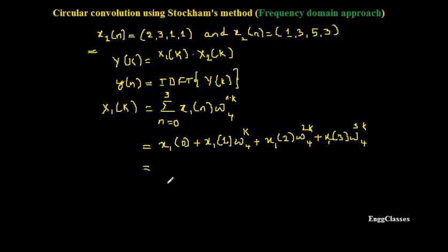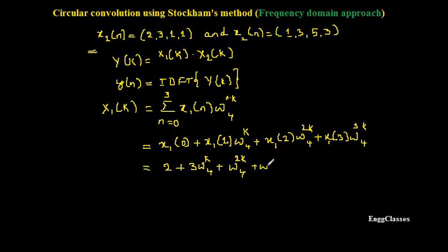Now substituting the values: x1(0)=2, x1(1)=3, x1(2)=1, x1(3)=1. So X1(k) = 2 + 3·W4^k + 1·W4^(2k) + 1·W4^(3k). This is the simplified expression for X1(k).